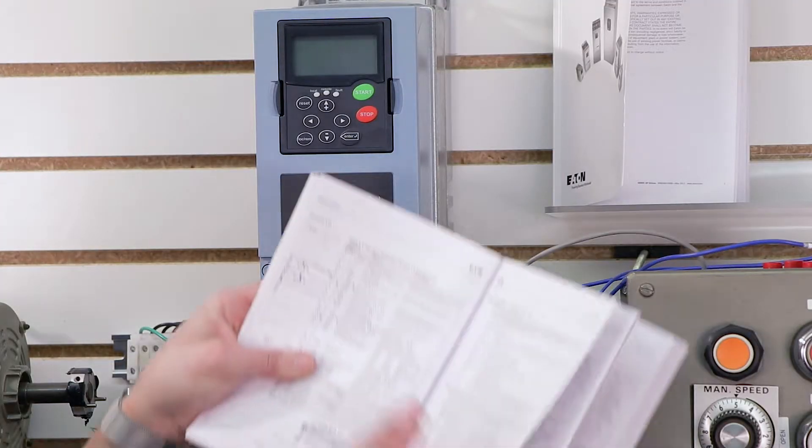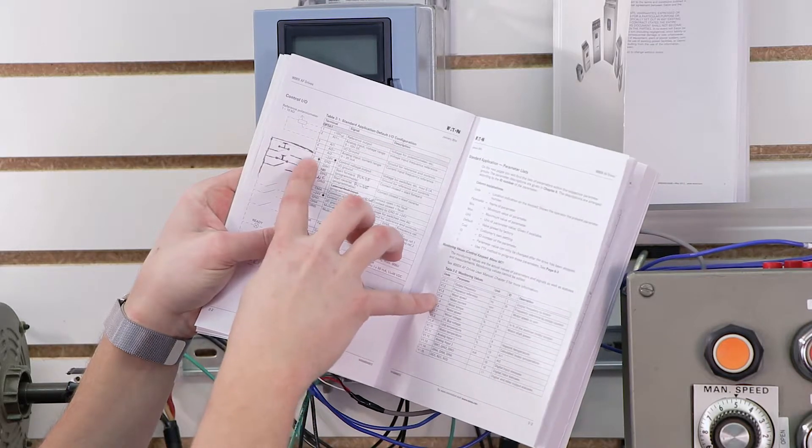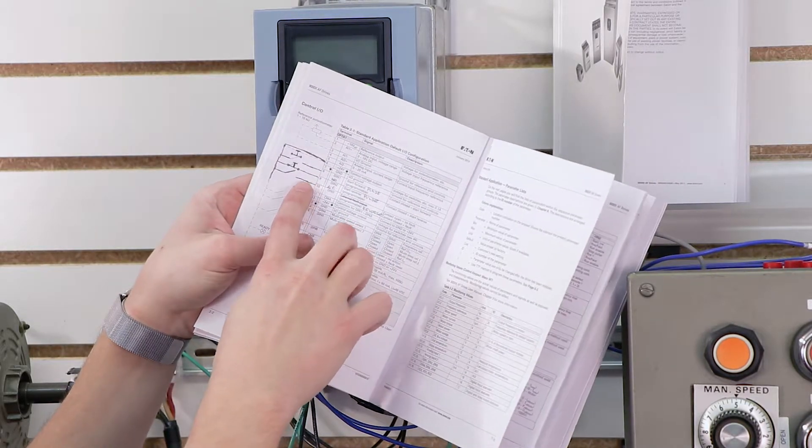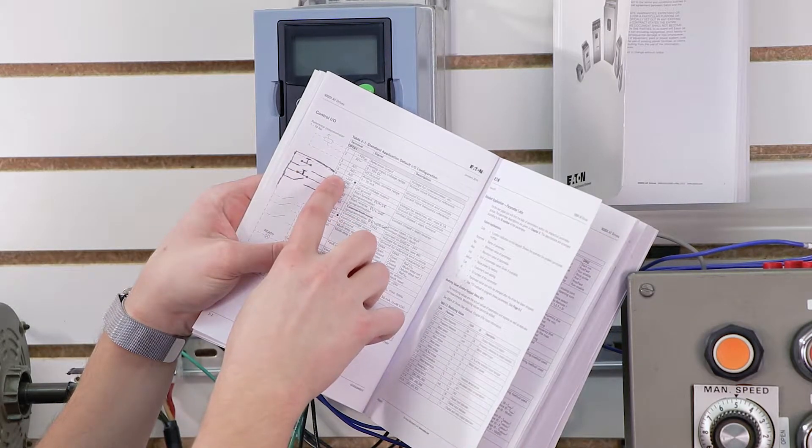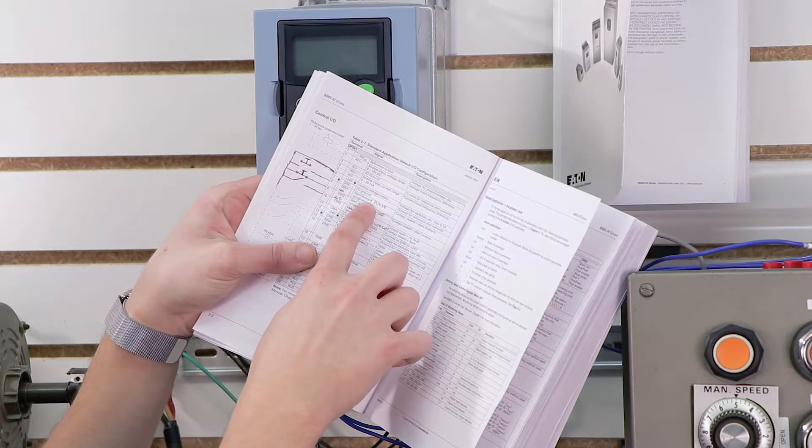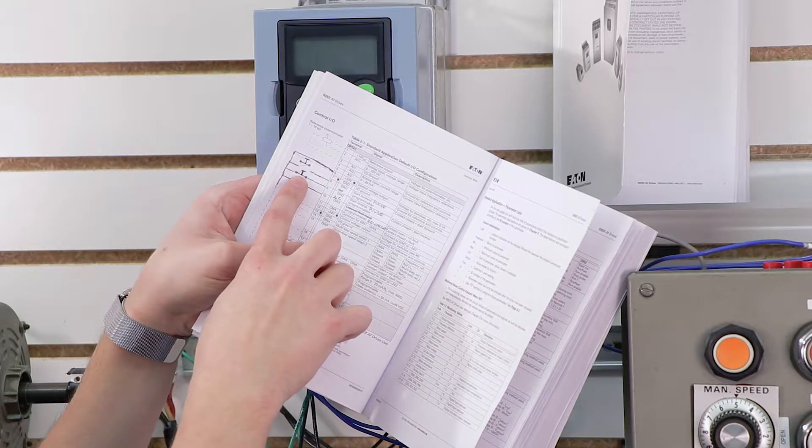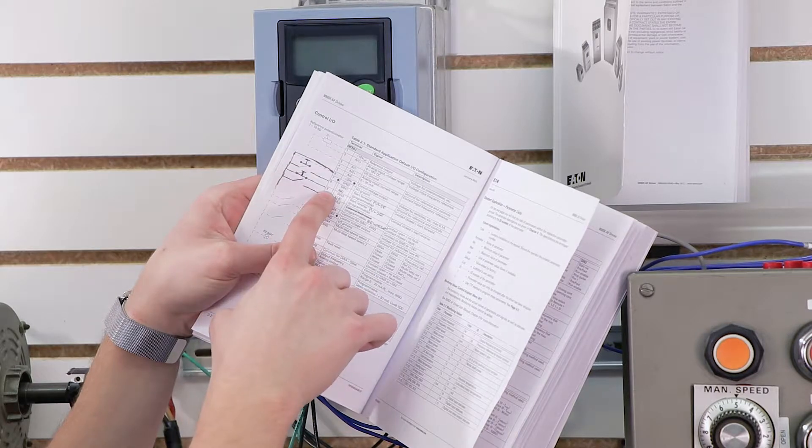So what I did in the manual was I modified the standard application macro, which we will actually set up here after we've done our wiring, and I've modified it so that I have a normally open push button that goes between terminal 6 and terminal 8, and that's for my start forward, which will be programmed for pulse, and then I wired a normally closed push button, which is my stop button, going from terminal 6 to 9, which will be stop pulse.